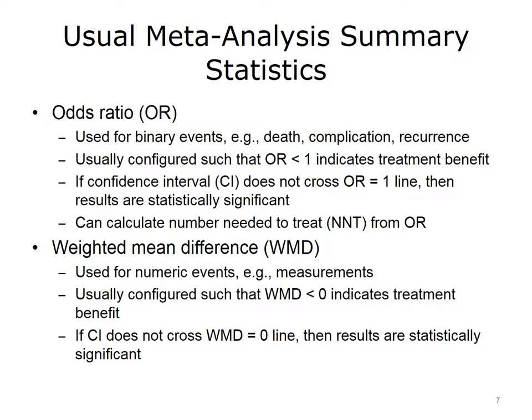The other summary statistic is weighted mean difference. This statistic is used for numeric events, such as measurements — for example, blood pressure value or blood sugar value. The weighted mean difference is usually configured such that a value less than zero indicates that there's a treatment benefit, and a value of greater than zero indicates that there's benefit for the control intervention, just as an odds ratio value of greater than one indicates that the control is of more benefit. If the confidence interval crosses over the weighted mean difference equals zero line, or if it does not cross over that line, it means that the results are statistically significant.